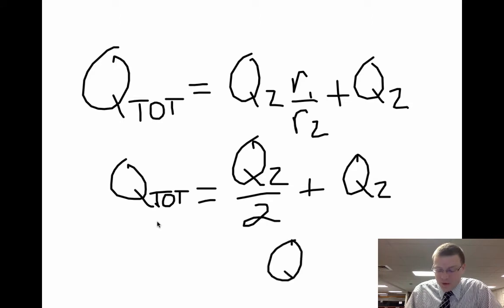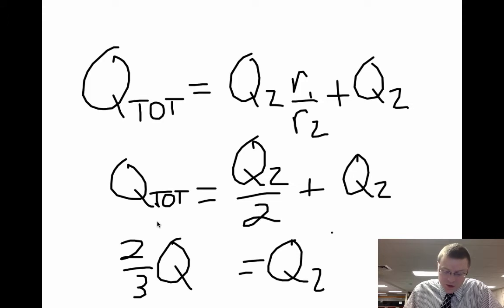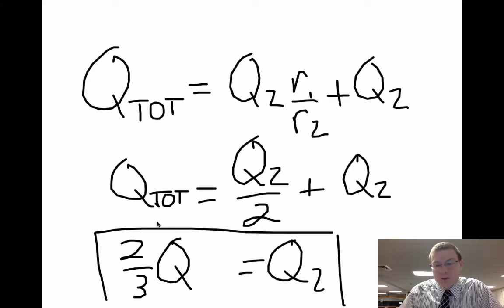And if I want to solve for Q2, Q2 is going to say that I have 2 thirds of the total charge. So since I know my total charge was about 0.55 nC, 2 thirds of that charge is going to reside on sphere 2. So if there's 2 thirds of the charge on sphere 2, that means there's only 1 third of that charge sitting on sphere 1. So from that, we're able to figure out exactly how much charge has redistributed itself.